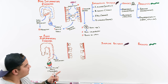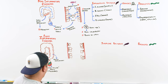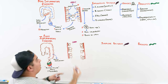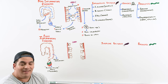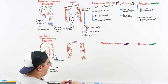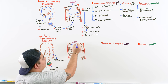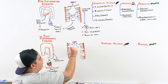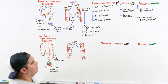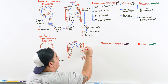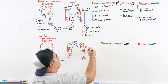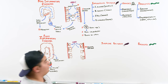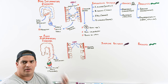Why are we getting bloody mucoid stools? The pathogens here may release enterotoxins, but critically, they're also causing direct mucosal injury and damage. Unlike the non-inflammatory type, here you get heavy mucosal damage.